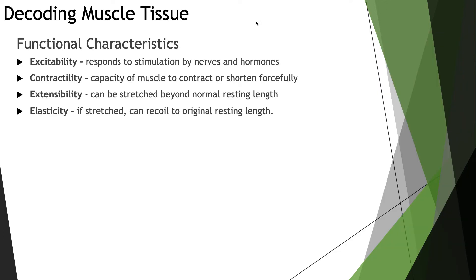Talking about some of the functional characteristics of skeletal muscle tissue: excitability means that skeletal muscle responds to stimulation by nerves and hormones. Contractility is the capacity of muscles to contract or shorten forcefully. Extensibility means that skeletal muscle fibers can be stretched beyond their normal resting length. Elasticity means that if stretched, they can return to their original resting length.